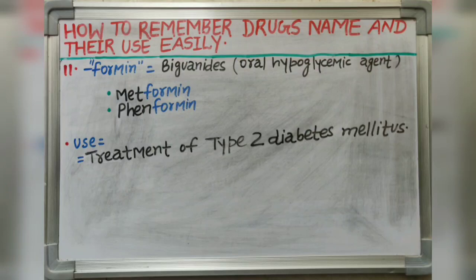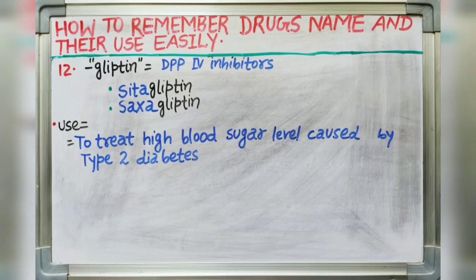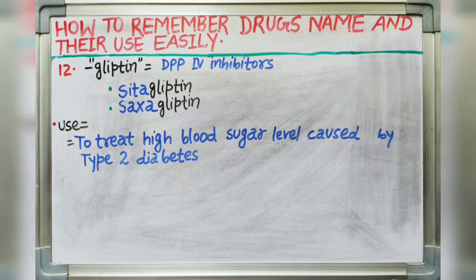Next suffix is -gliptin. Gliptin indicates DPP-4 inhibitors. Drugs like sitagliptin and saxagliptin belong to DPP-4 inhibitors. It is used to treat high blood sugar levels caused by type 2 diabetes mellitus.